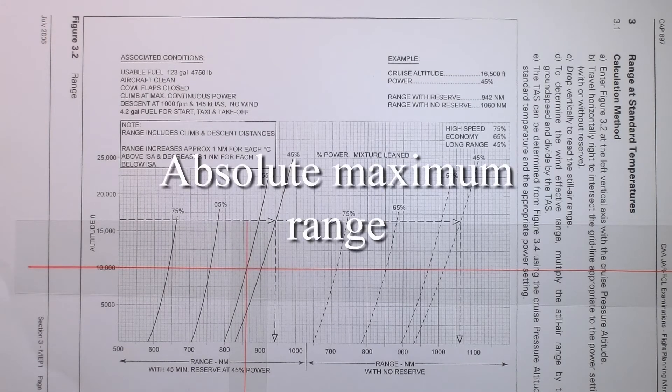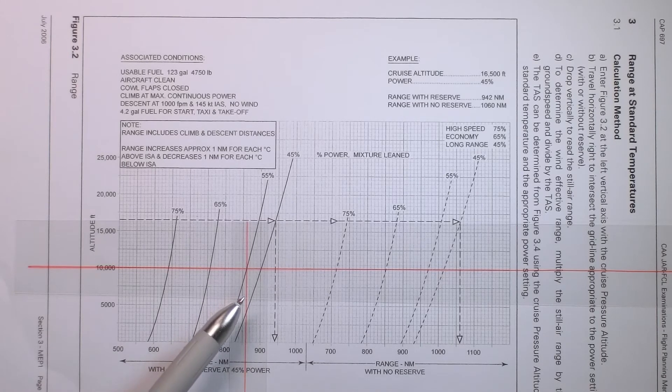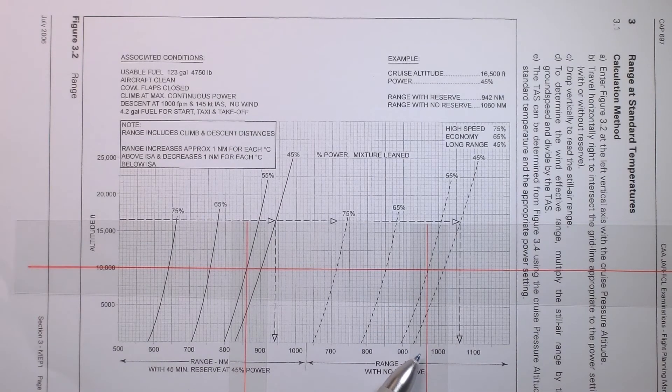Now, supposing we want to find the absolute maximum range that we can fly and utilizing all our reserve, we will have to follow the chart across to the right hand side where we have range with no reserve. And this basically means that if you hit that range, you will have nothing left in tanks. Let's do that for our 55% power setting. And it should look something like this. Our range cruising at 10,000 feet with a power setting of 55% gets us a range of 950, 960, 970 nautical miles, after which we will have no more reserve fuel.